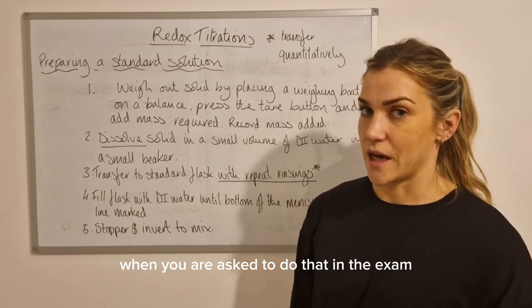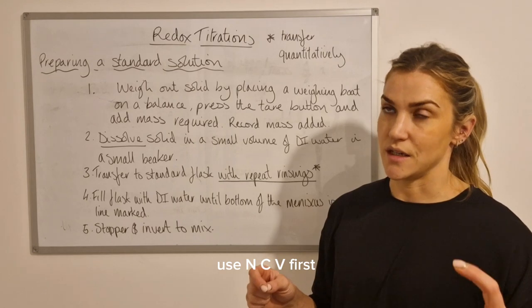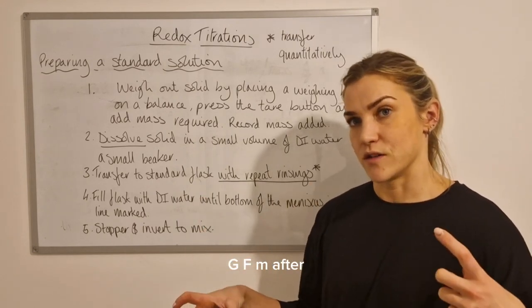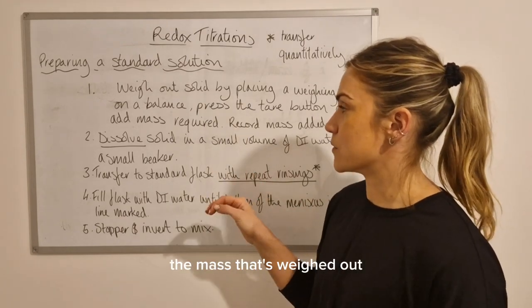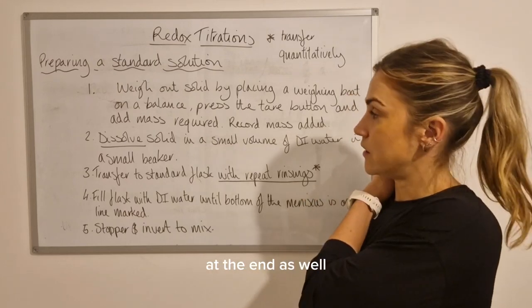You would have calculated based on the concentration of the solution you're trying to make how much of the solid you would need to add first of all. When you are asked to do that in the exam, you just need to use the two mole relationships - use n=cv first to work out the number of moles, and then n=m/GFM after to work out the mass needed. Then that would be the mass that was weighed out, and then you would always record the mass that you actually weighed out at the end as well.